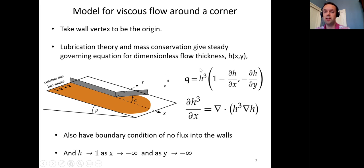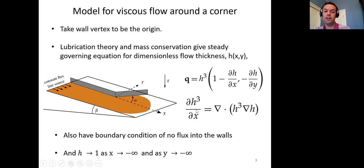The flux is given by an expression where the '1' is associated with gravity acting parallel to the plane in the downstream x-direction, while dh/dx and dh/dy are associated with gravity acting normal to the plane, giving hydrostatic pressure gradients. Taking the divergence of the flux to zero in steady state yields a nonlinear advection-diffusion type equation for the dimensionless flow thickness h. Boundary conditions include no flux into the walls and h returning to one — its unperturbed value — far upstream and far cross-stream of the wall.